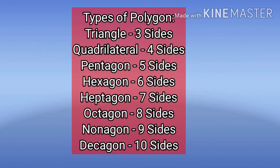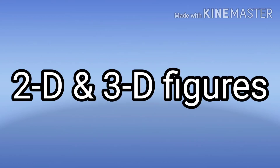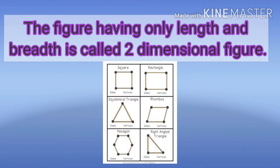Now let's know about two-dimensional and three-dimensional figures — also called 2D and 3D figures. A figure having only length and breadth is called a two-dimensional figure or 2D figure. All polygons are two-dimensional figures.